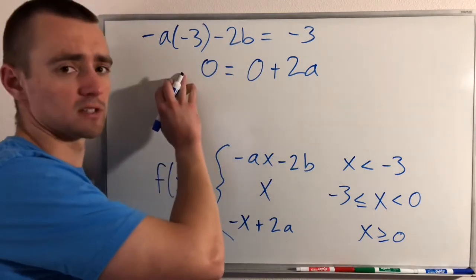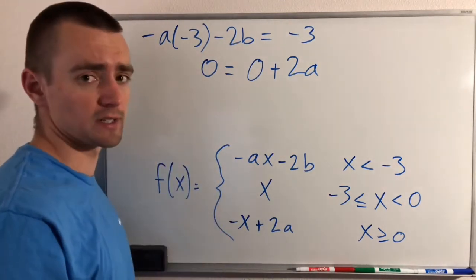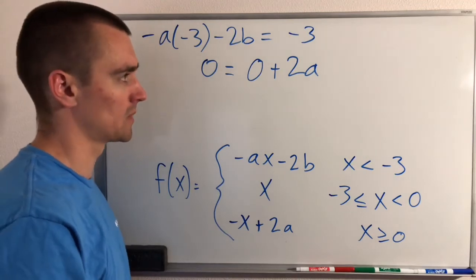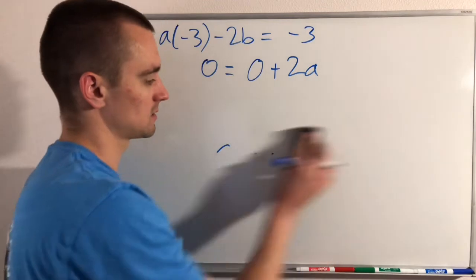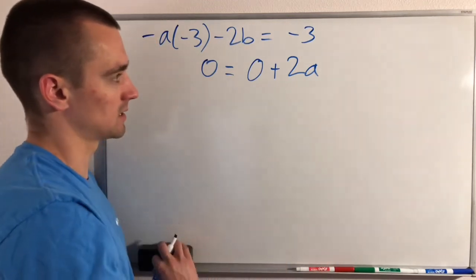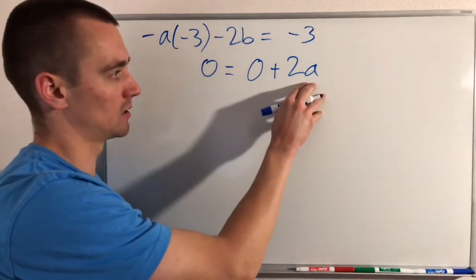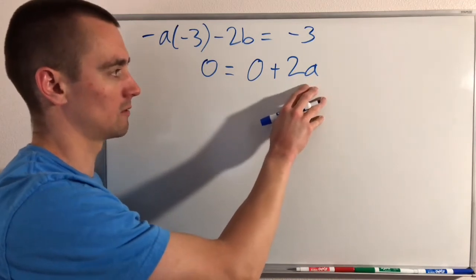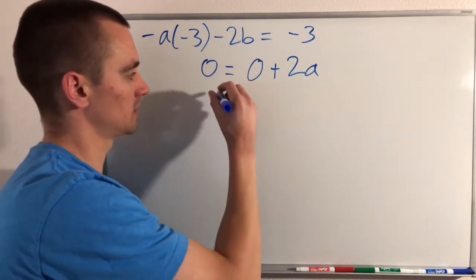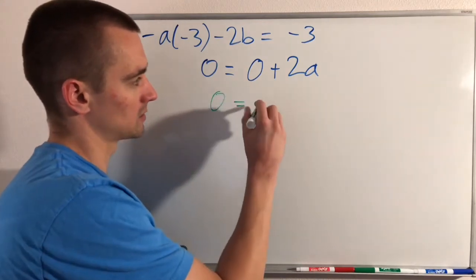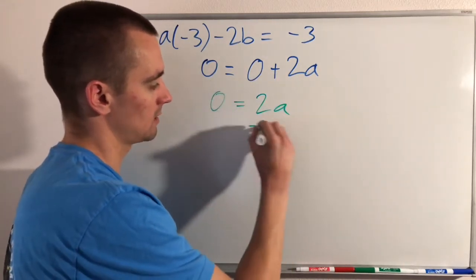So now we basically have a system of equations with two variables and two equations, and we just need to solve the system. Fortunately it works out pretty easily because the second equation doesn't have any b's in it — it just has one unknown, the constant a. So we can say 0 equals 2a, which gives us a equals 0.